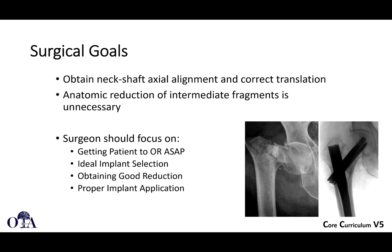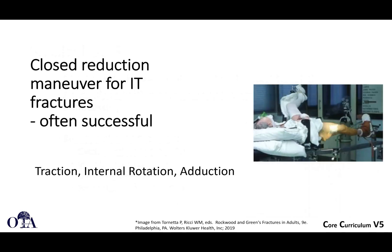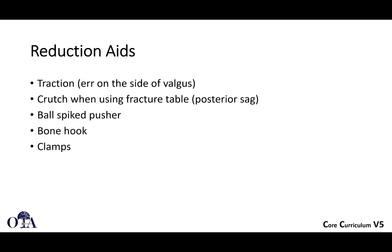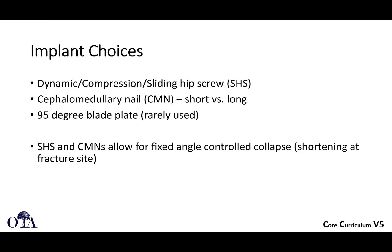Surgical goals are to obtain neck-shaft axial alignment and correct rotation or translation. You don't have to get absolute anatomic reduction of intermediate fragments like the lesser trochanter. The goal is to get the patient to the OR within 24 hours, ensure ideal implant selection, get a good reduction, and make sure the implant is placed properly. Closed reduction usually works — typically traction, internal rotation, and abduction on a traction table. When doing traction, you can err slightly toward valgus, certainly not varus. If there's posterior sag, you may want something underneath the limb — a crutch can sometimes work. Other reduction aids include a ball-spiked pusher, bone hook, and clamps.